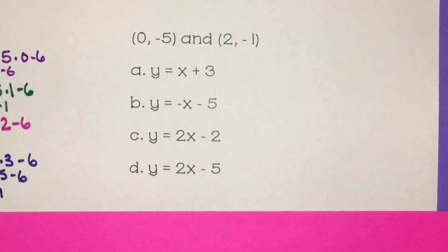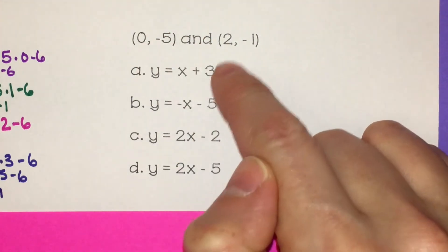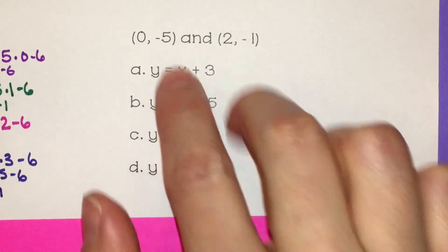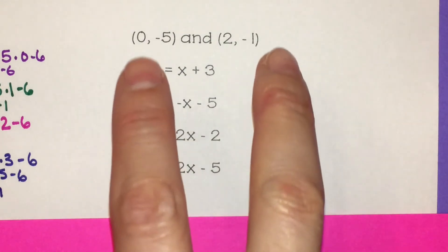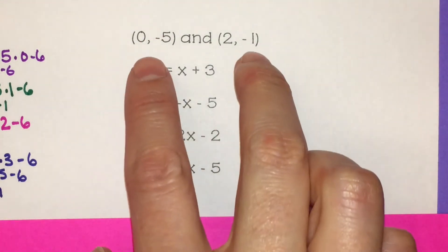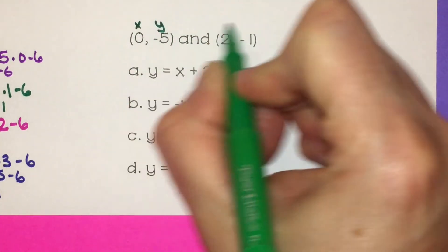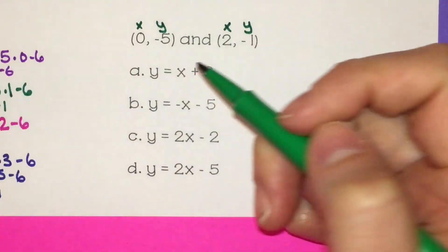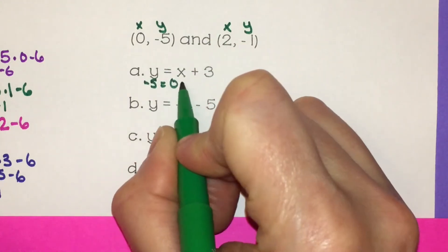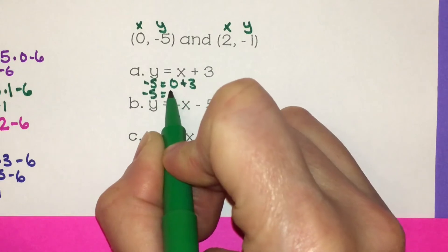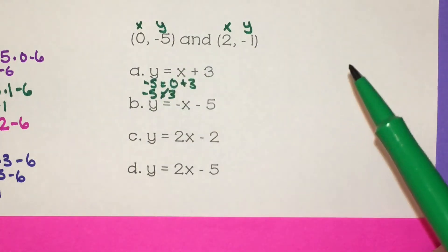Last one. This one's different because you have to identify which equation satisfies both points — meaning which of these equations has both of the points on the line. One of the points might work for some of them, but you need to know which equation both points work for. So I'm going to start by plugging the first point in: y is negative 5 equals x is 0 plus 3. Negative 5 does not equal 3, so I already know this first point does not work for letter A.